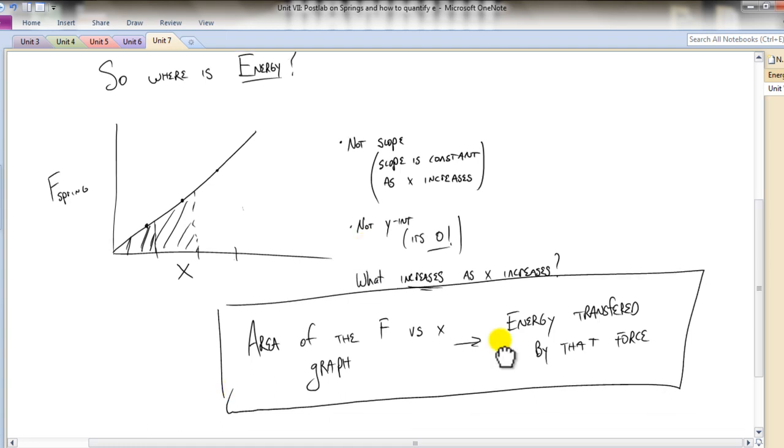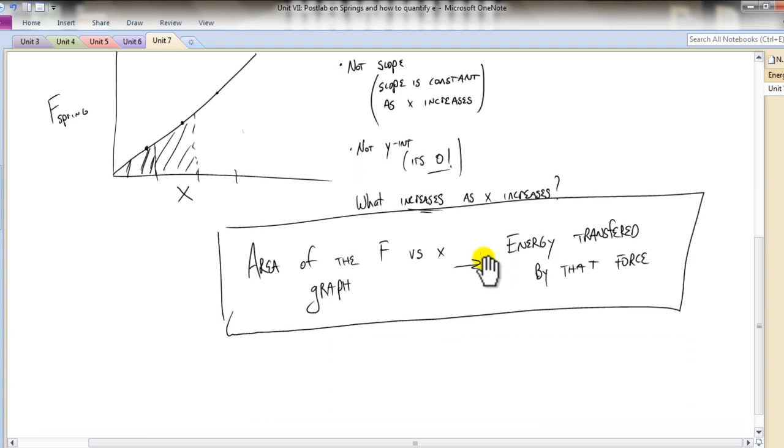For instance, what we can do now is we can say the area of the F versus x graph is the energy transferred by that force. But we can be a little bit more specific in this case. What is this force? This is a force due to a spring. So this area here is the energy transferred by the spring because we're looking at F of the spring. So this actually becomes Es.